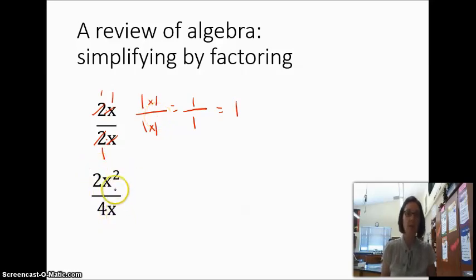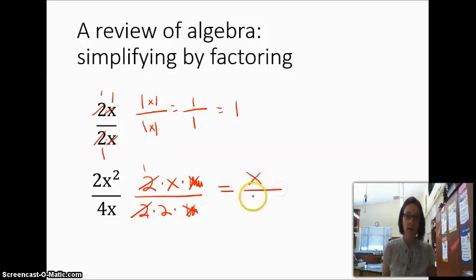Then we can factor this one out because it's a little bit more complicated. We have 2 times x times another x. That's what the squared means. We're multiplying x by itself. Then we have 4 which is 2 times 2 and then we have that multiplied by a single x. So one of these 2's can divide out one of these 2's. One of these x's can divide out one of these x's. So what we'd be left with that didn't divide out and become 1 would be an x in the numerator and a 2 in the denominator. So this would be the simplest we could get that expression.